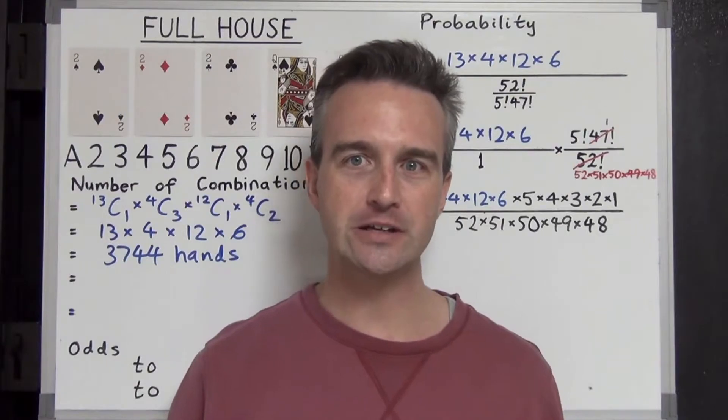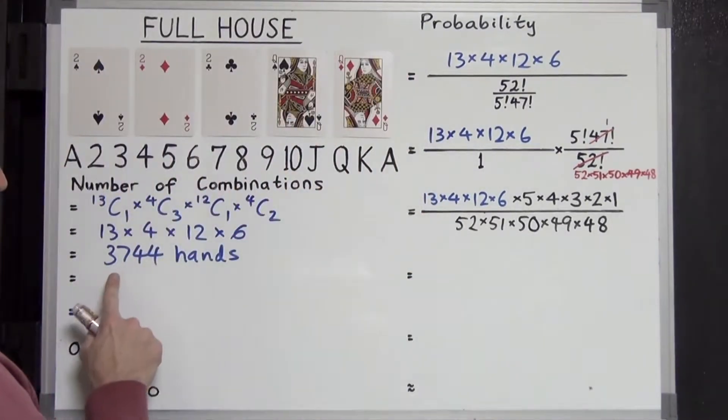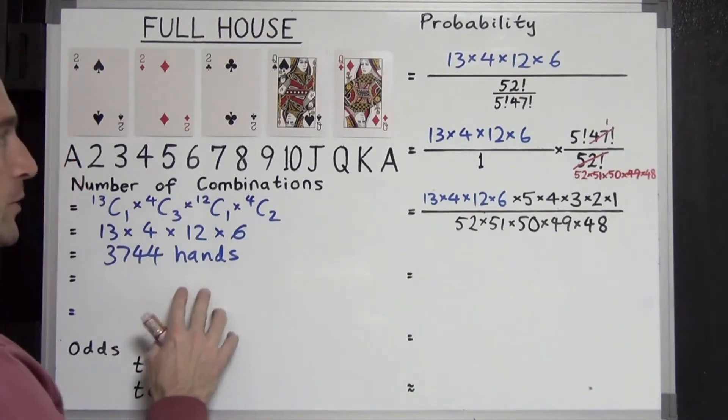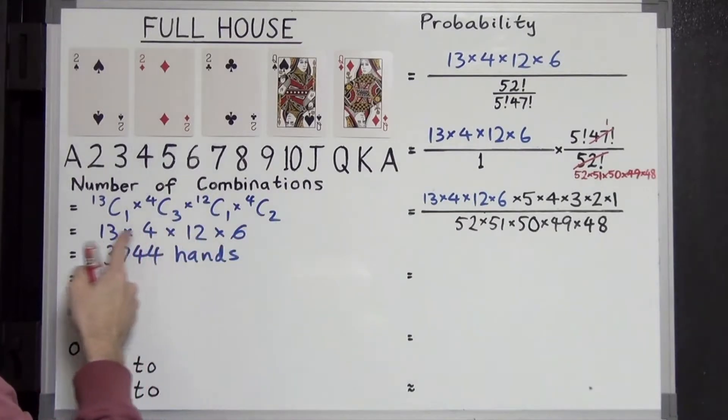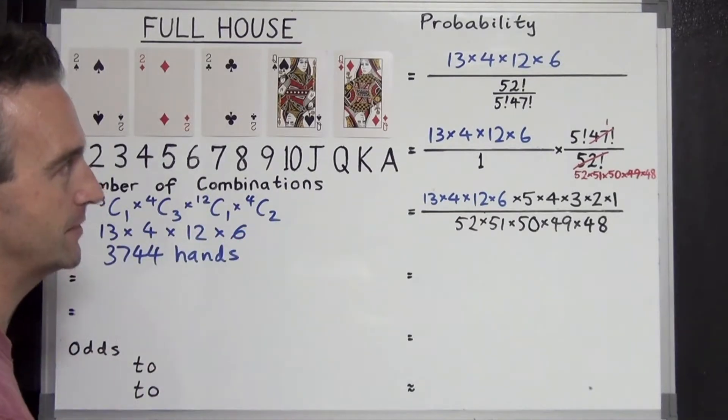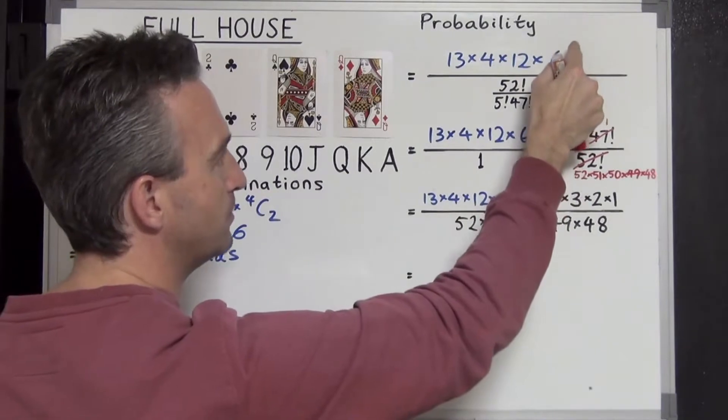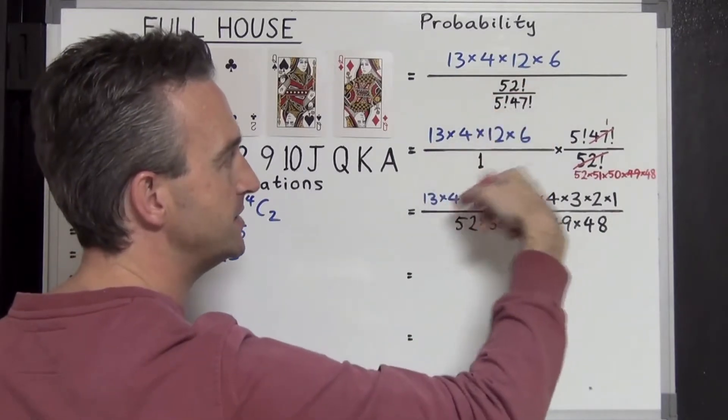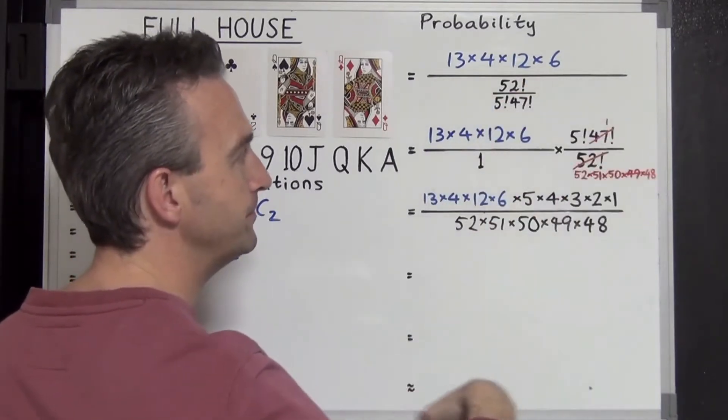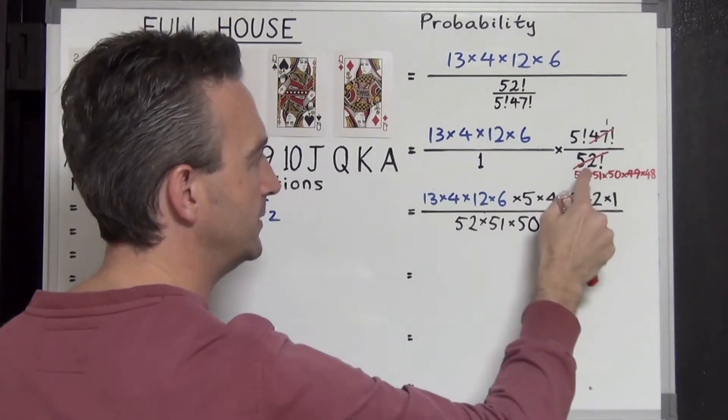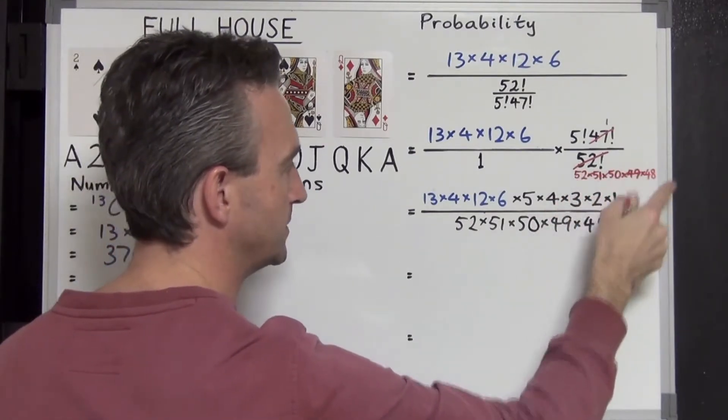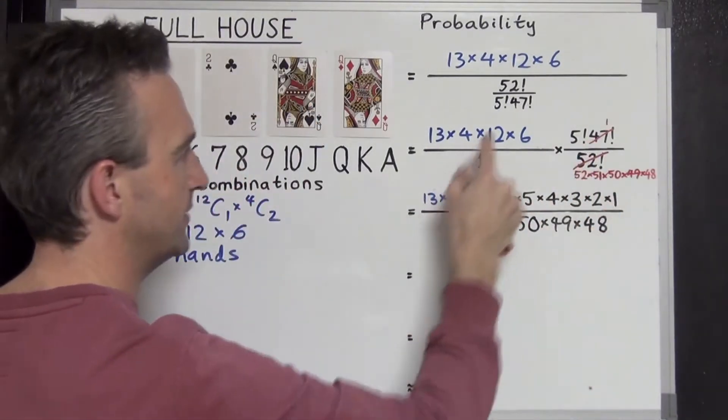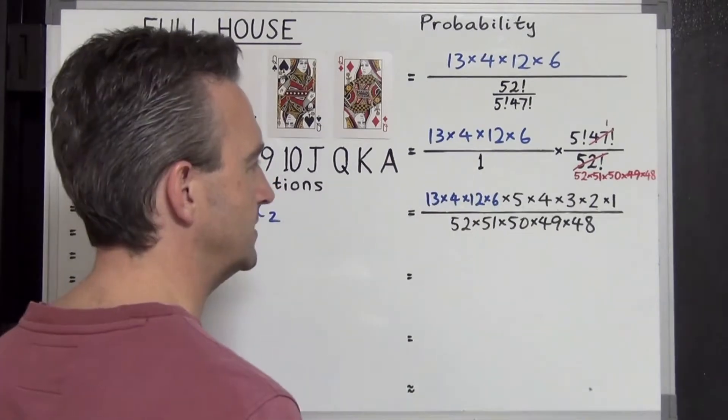Are you ready to look at the probability and odds of getting a full house? So we have 3,744 possible full houses for five card poker. But I'm going to write it in factored form because we're going to cancel a whole bunch of stuff. The total number of possible hands divided by the total possible number of poker hands, this is 52C5. We're dividing by this so it gets flipped and multiplying. 47 factorial cancels, leaving the 52 times 51 times 50 times 49 times 48 down the bottom. Factorial 5 comes over here, and our 3,744 in blue comes down here.